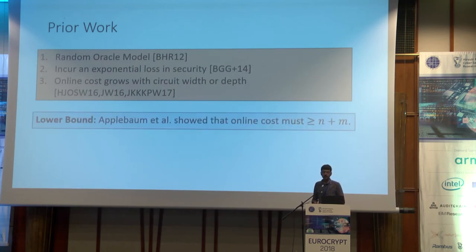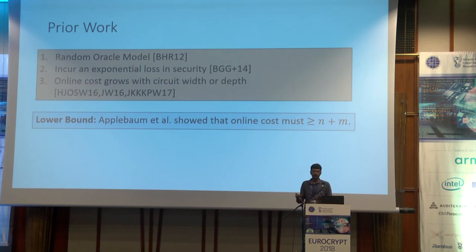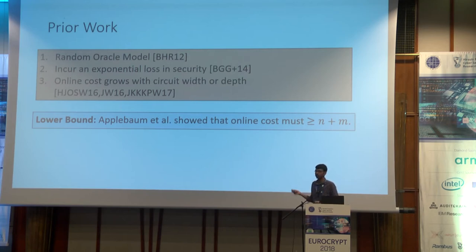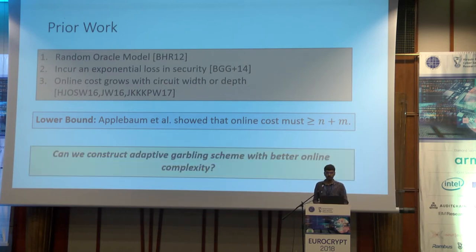On the negative side, Applebaum et al. showed that any standard model construction of adaptively secure garbling must incur an online cost of at least N plus M, where N is the input length and M is the output length. So there is a significant gap between the known upper bounds, which grow with the circuit width or depth, and the known lower bound of N plus M. This brings us to the main question: can we construct adaptively secure garbling schemes with better online complexity?